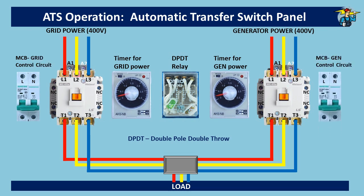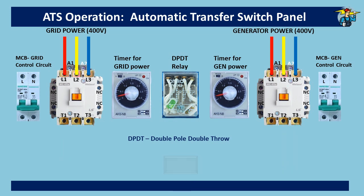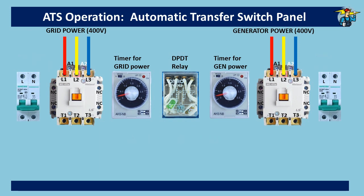Although three-phase power from grid and generator is shown here, you can also wire a single-phase 220-volt generator for the load when grid power is from a single-phase 220-volt supply. For this, connect phase and neutral wires to any two ports on the main contactor and keep the remaining port of the contactor empty.